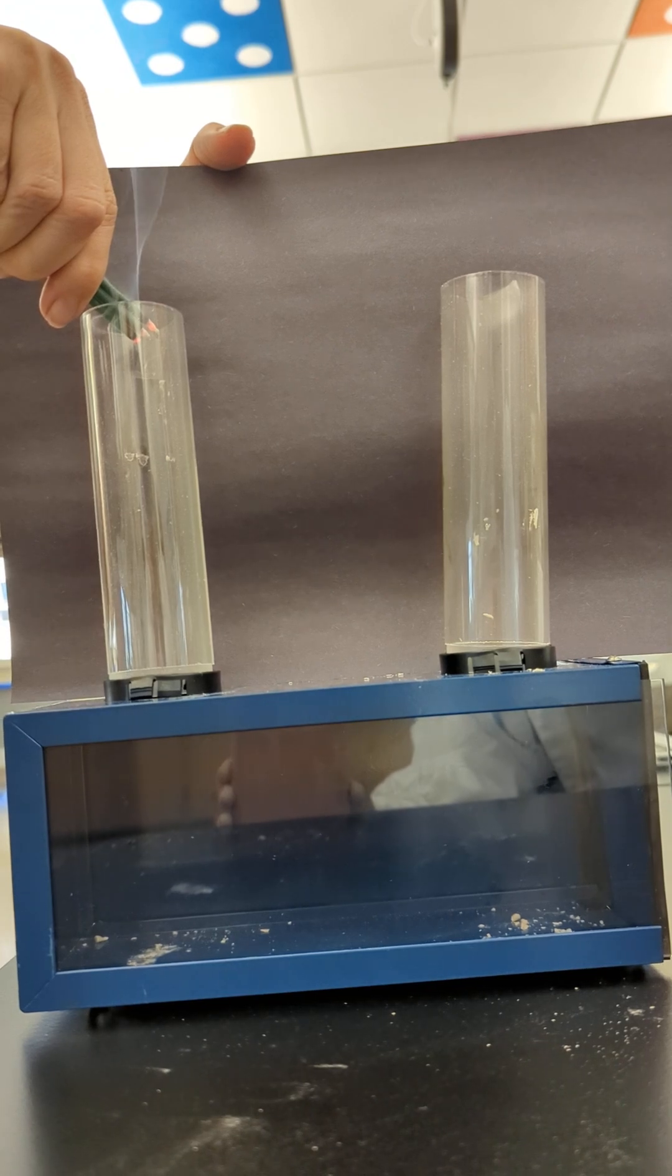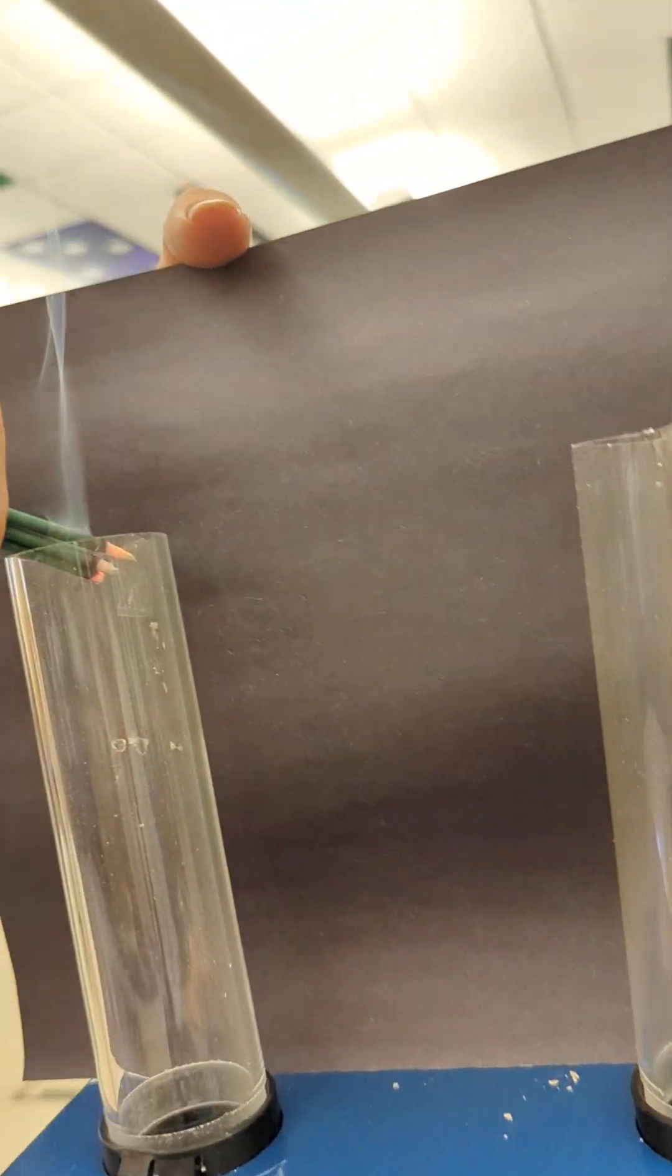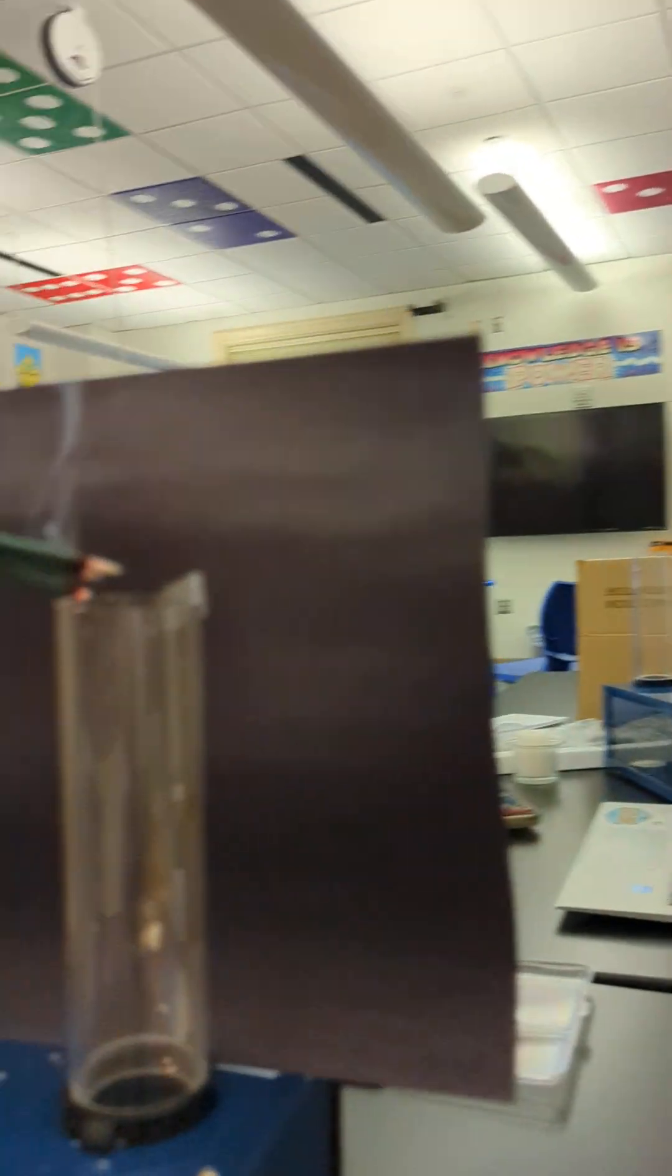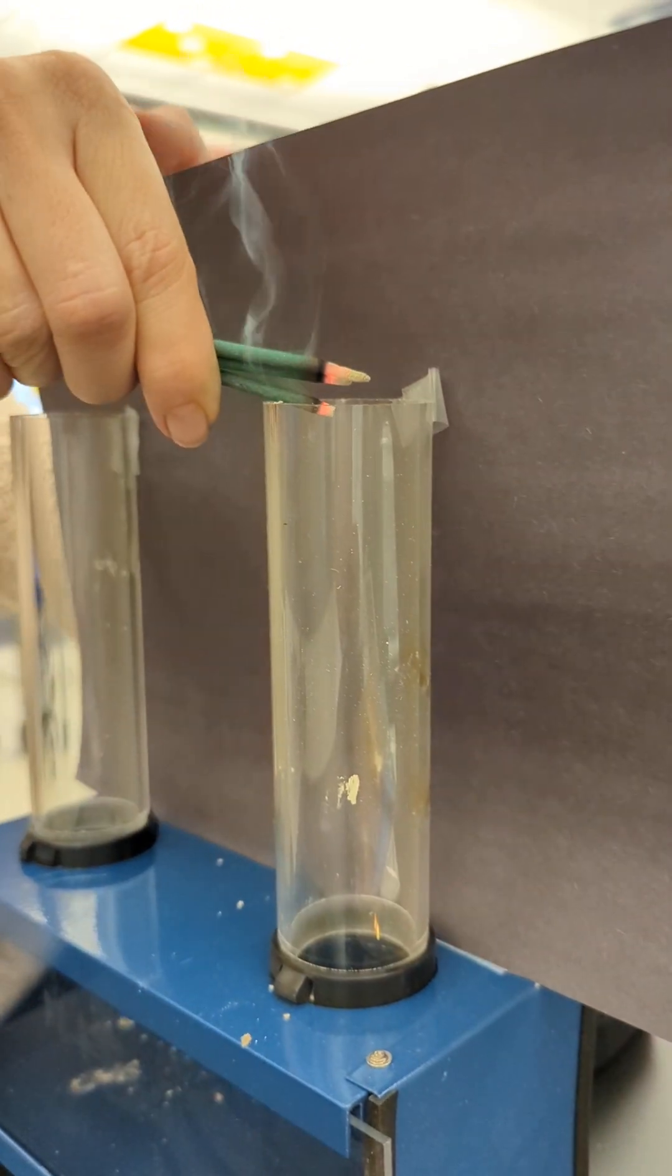As you can see the smoke is coming out. It's going up. All right, we're gonna place the incense over chimney number two and as you can see the smoke is going up.